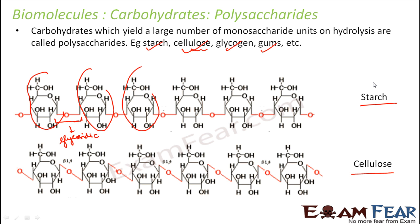Another important thing to mention here is that monosaccharides — glucose, fructose, erythrose — are used as an instant source of energy. For example, if you are feeling too weak after exercise, you drink a glass of glucose and get some energy. Monosaccharides give you instant energy because glucose is already in its simplest form and can be utilized immediately. But they do not act as energy storage.